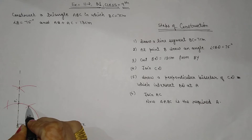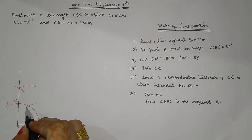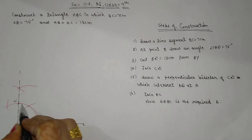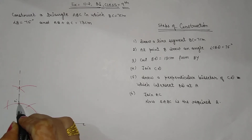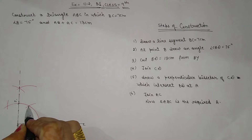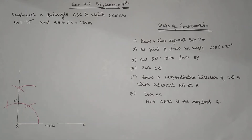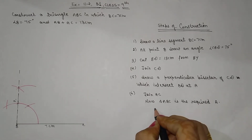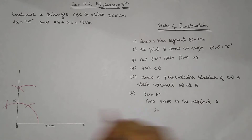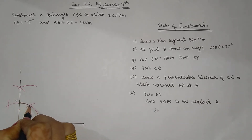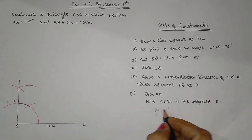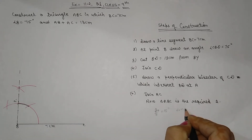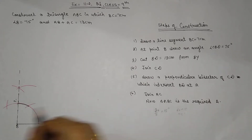So 90 and 60 — how much angle will we get? The difference between 90 and 60 is 30. So 30 divided by 2 gives 15 degrees. That means 60 plus 15 equals 75 degrees.